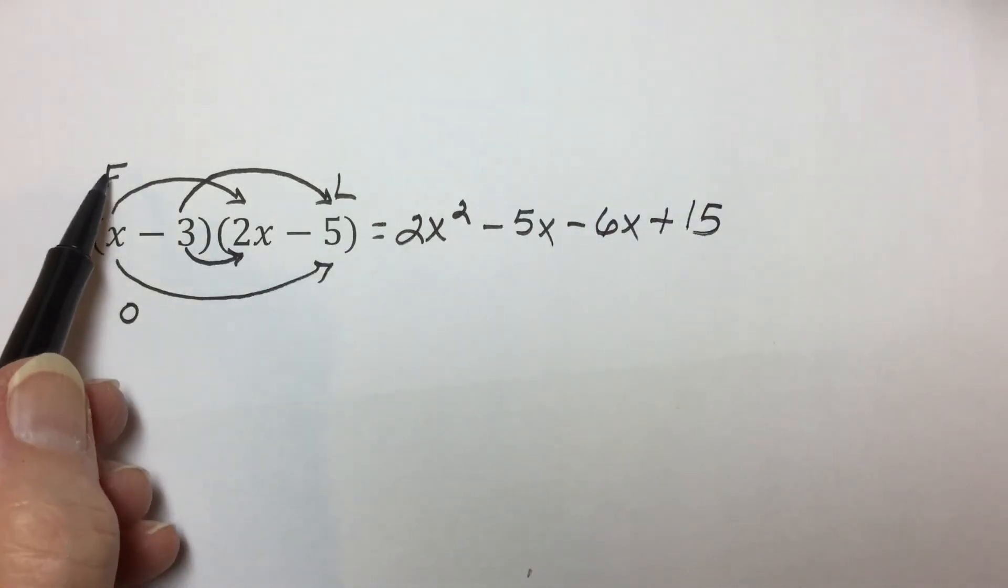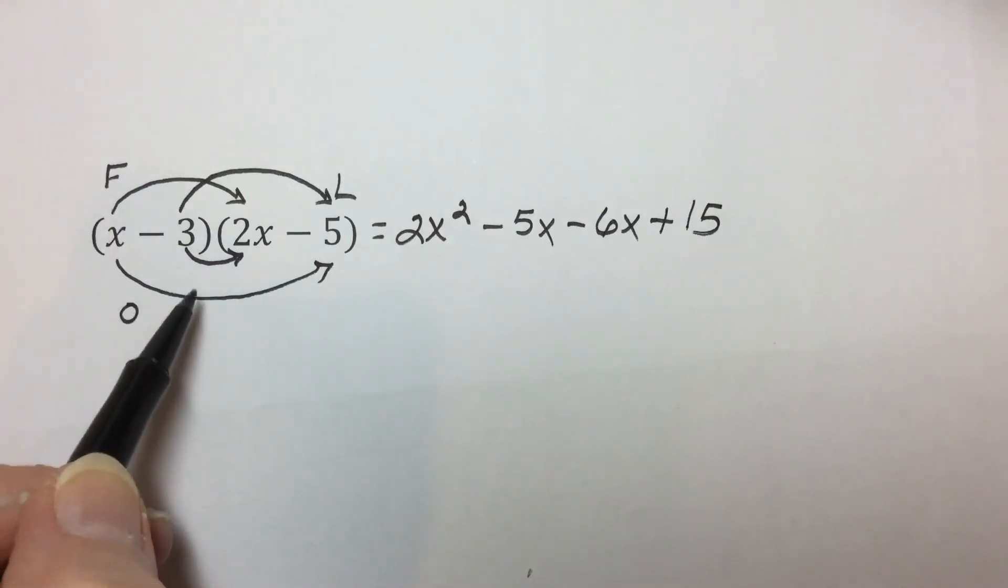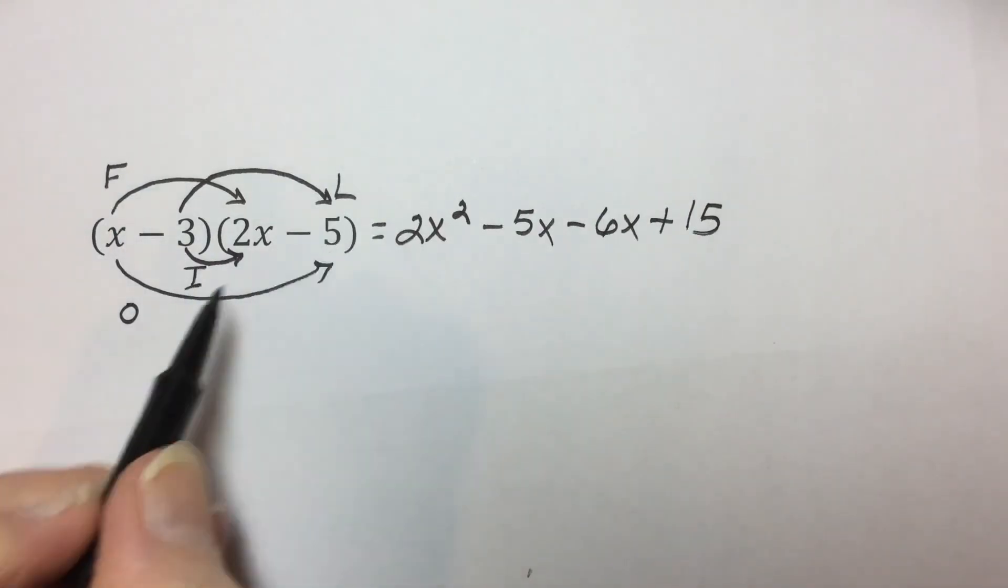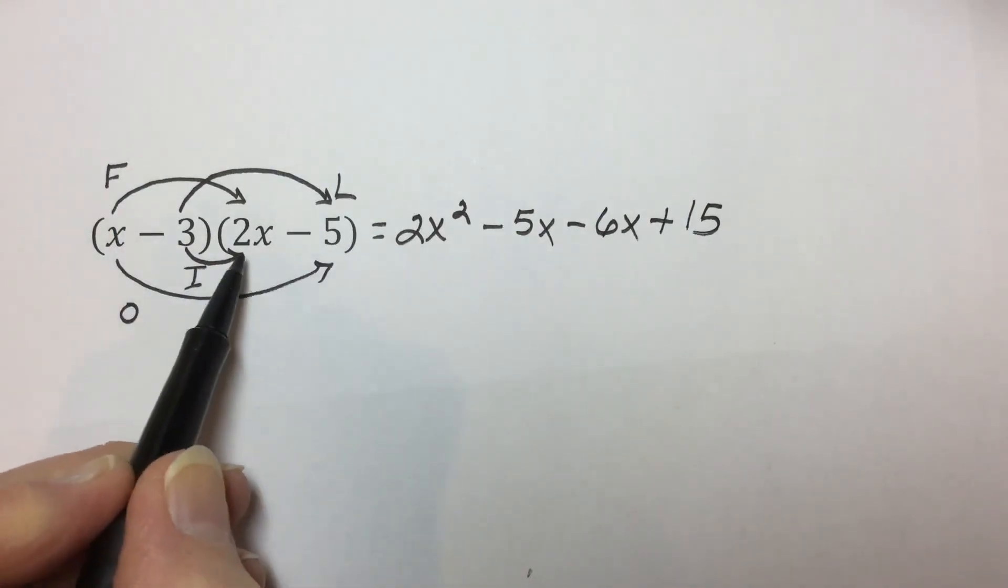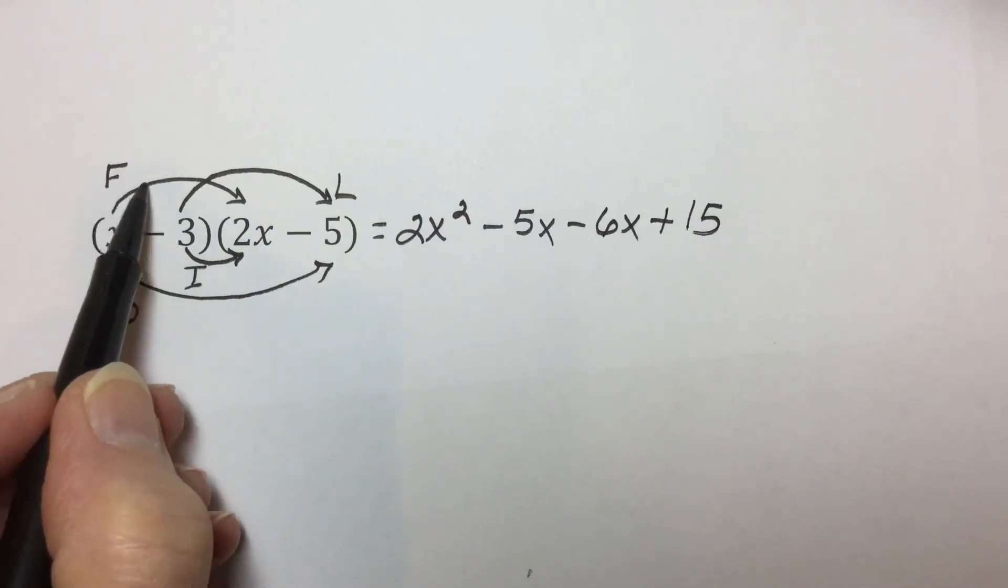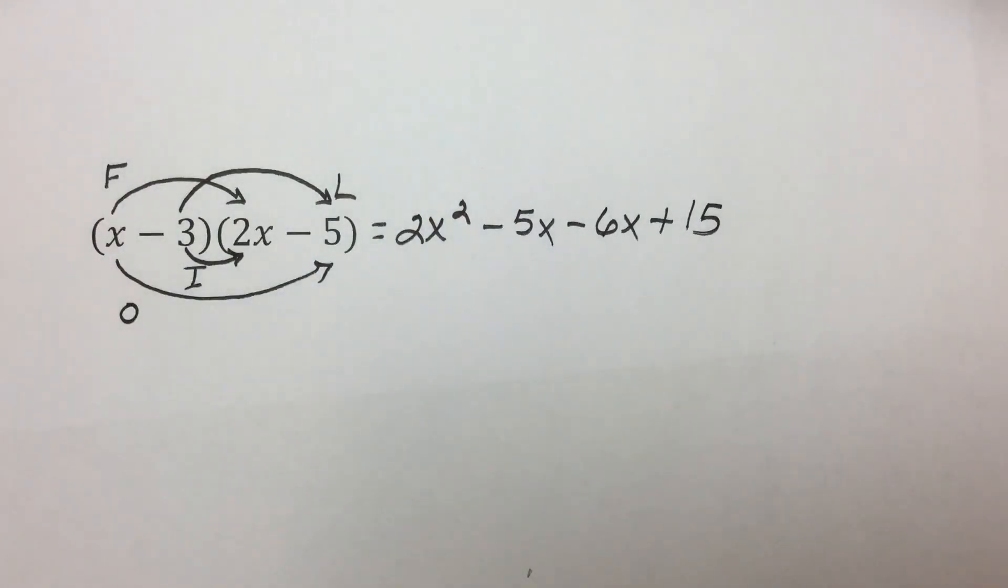If you look at the pattern besides the F, the O, the I, and the L, we have non-intersecting loops and intersecting loops as a way of also ensuring that we've done the correct distribution of the binomial by binomial multiplication.